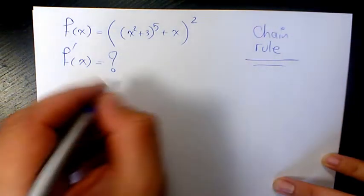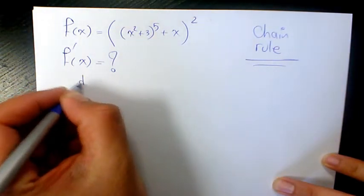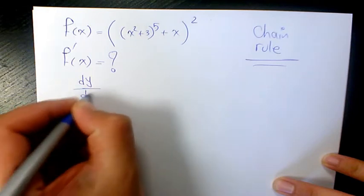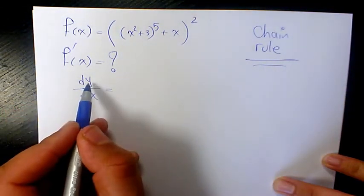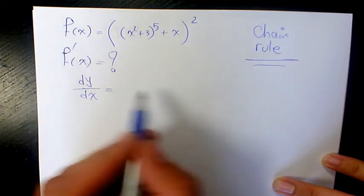What does that mean, chain rule differentiation? It is saying that if you want to find the derivative of y with respect to x, and if y is a function of u and u is a function of x,